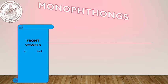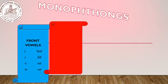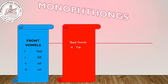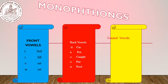Monophthongs are classified into front vowels, back vowels, and central vowels. There are 4 front vowels: /iː/ as in 'feel', /ɪ/ as in 'fill', /e/ as in 'set', and /æ/ as in 'sat'. Back vowels — there are 5 distinctive back vowels: /ɑː/ as in 'car', /ɒ/ as in 'pot', /ɔː/ as in 'cot', /ʊ/ as in 'put', /uː/ as in 'pool'. Central vowels — there are 3 central vowels, and the 3 sounds are somewhat similar to each other with slight variations: /ʌ/ as in 'cut', /ɜː/ as in 'bird', and the schwa /ə/.